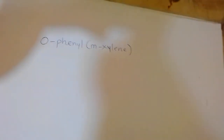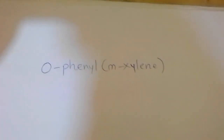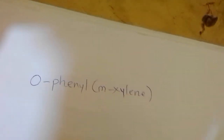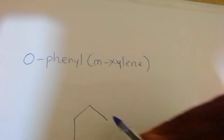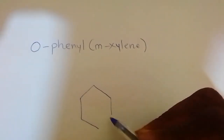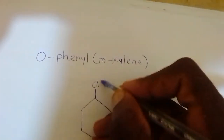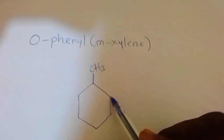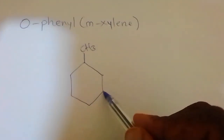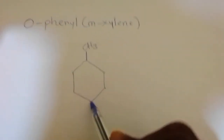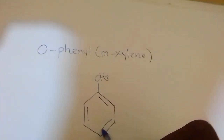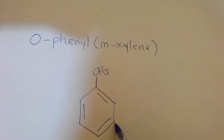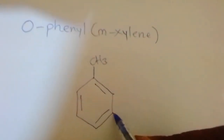Let's look at this structure and how to draw M-xylene. Xylene is a benzene ring with two methyl groups. One methyl is placed first, and the second methyl can come at the ortho position to form O-xylene, at the meta position to form M-xylene, or at the para position to form P-xylene. In this structure we are drawing M-xylene, so the second methyl is at the third position with respect to the first methyl.